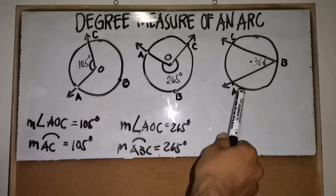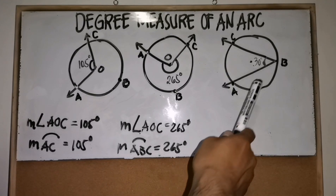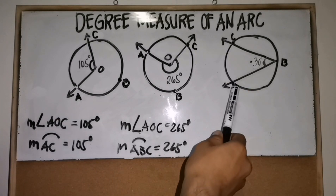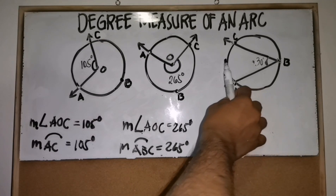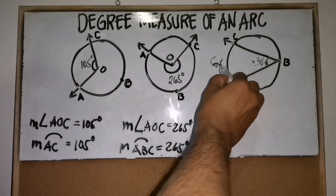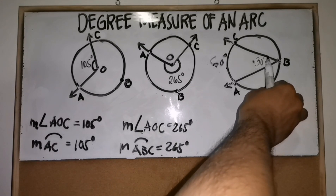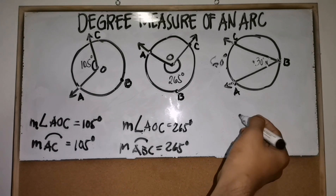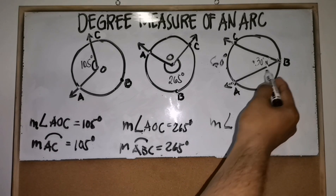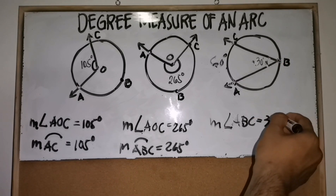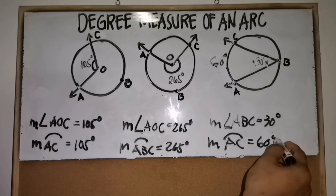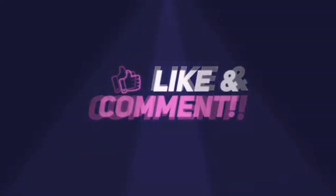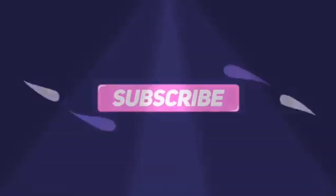However, if the angle is an inscribed angle with an intercepted arc, then the measure of the intercepted arc is twice the measure of its inscribed angle. For example, if the inscribed angle measures 30 degrees, then the intercepted arc measures 60 degrees — twice the inscribed angle. So if the measure of inscribed angle ABC is 30 degrees, then the measure of arc AC is 60 degrees.